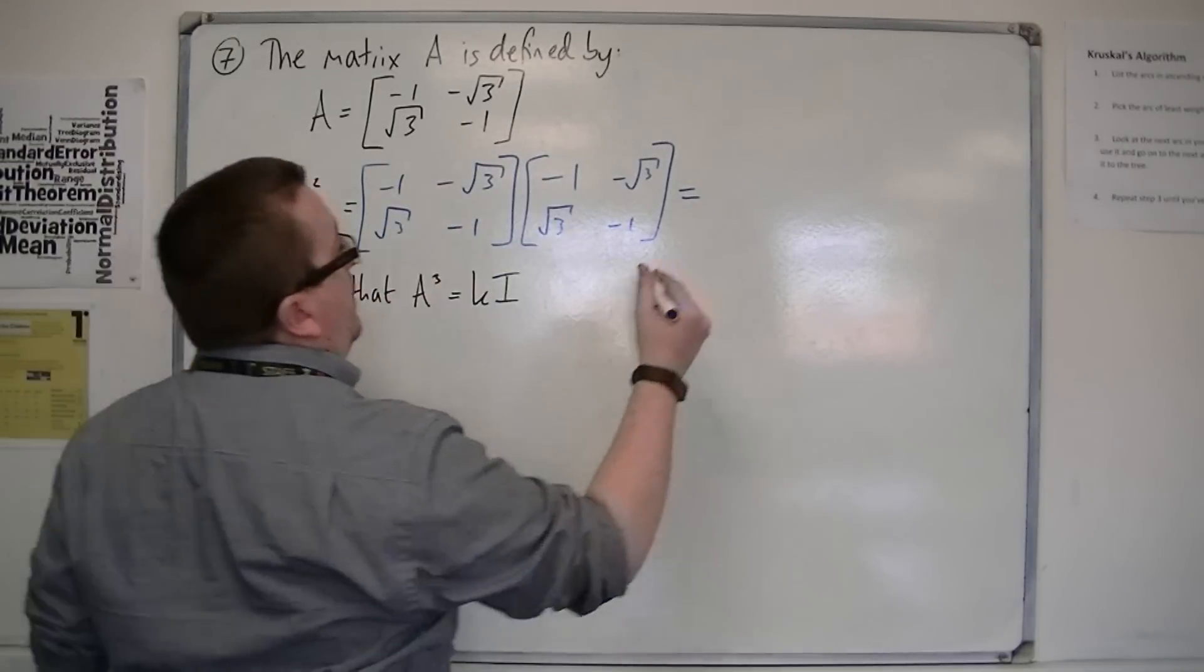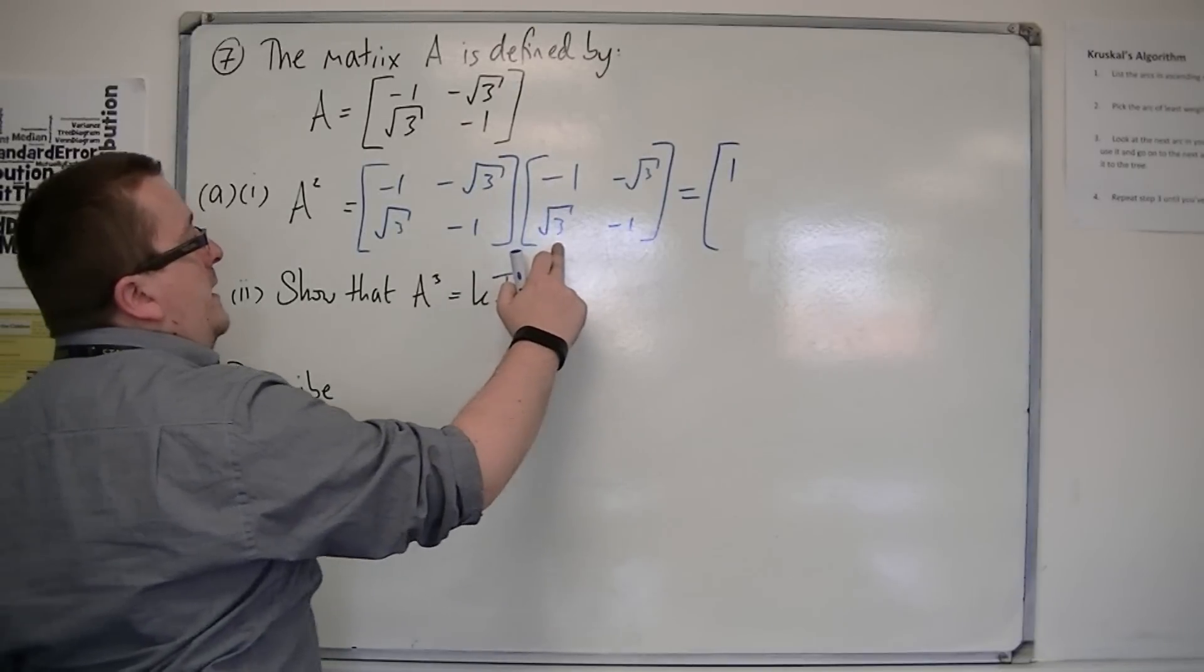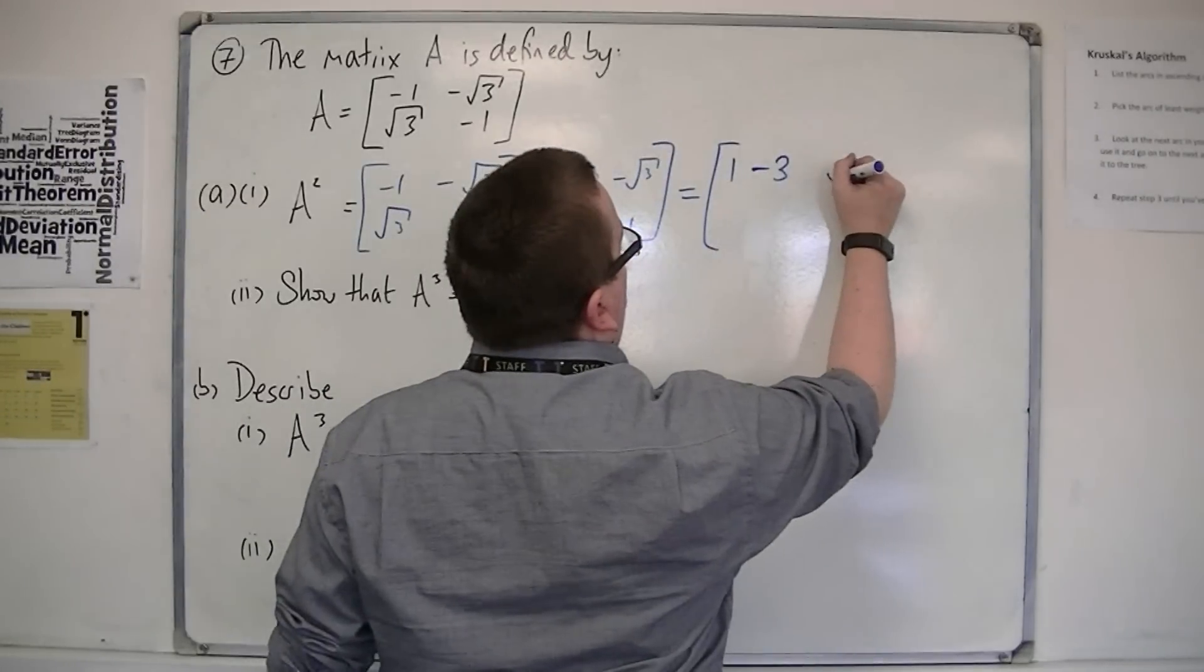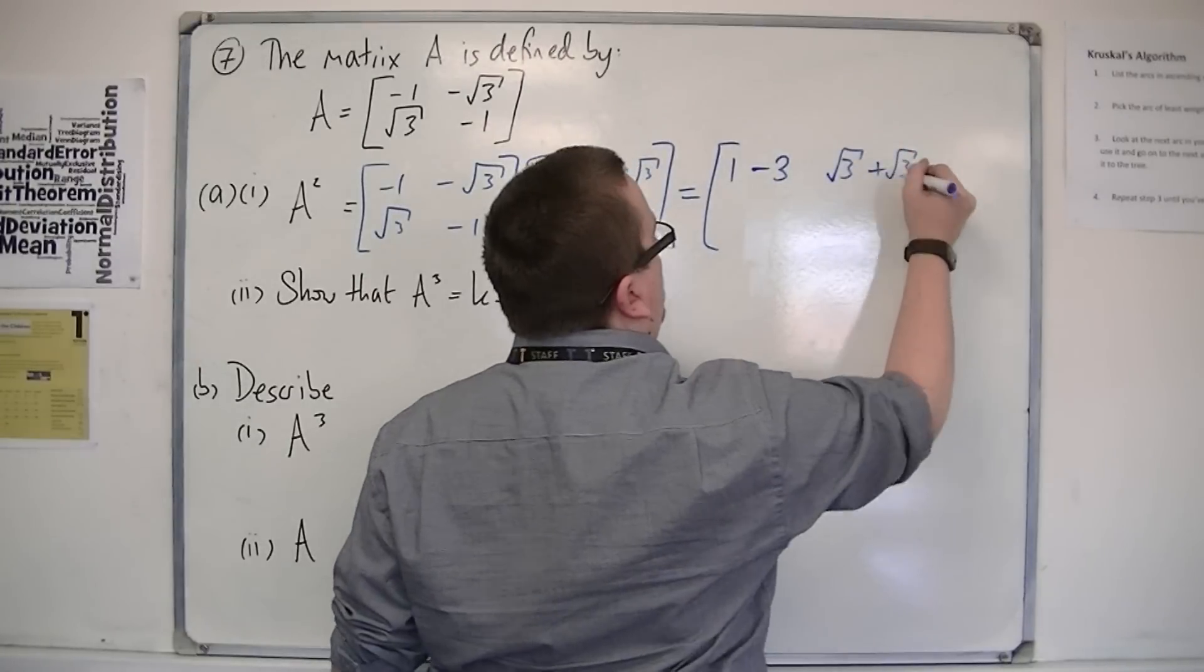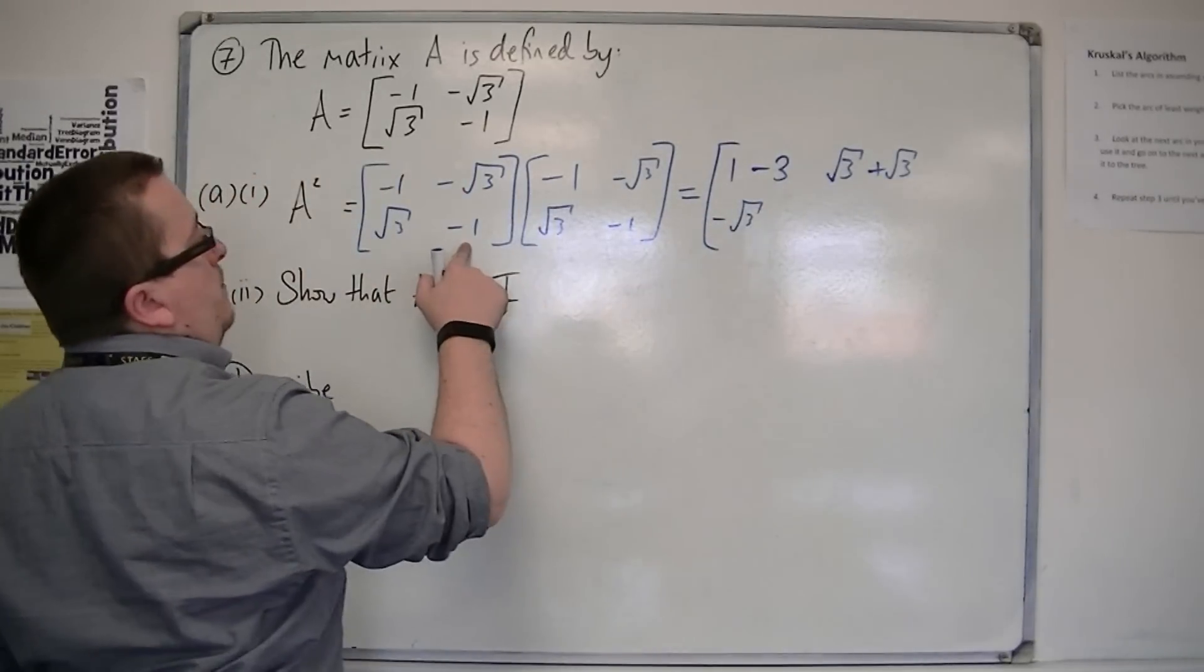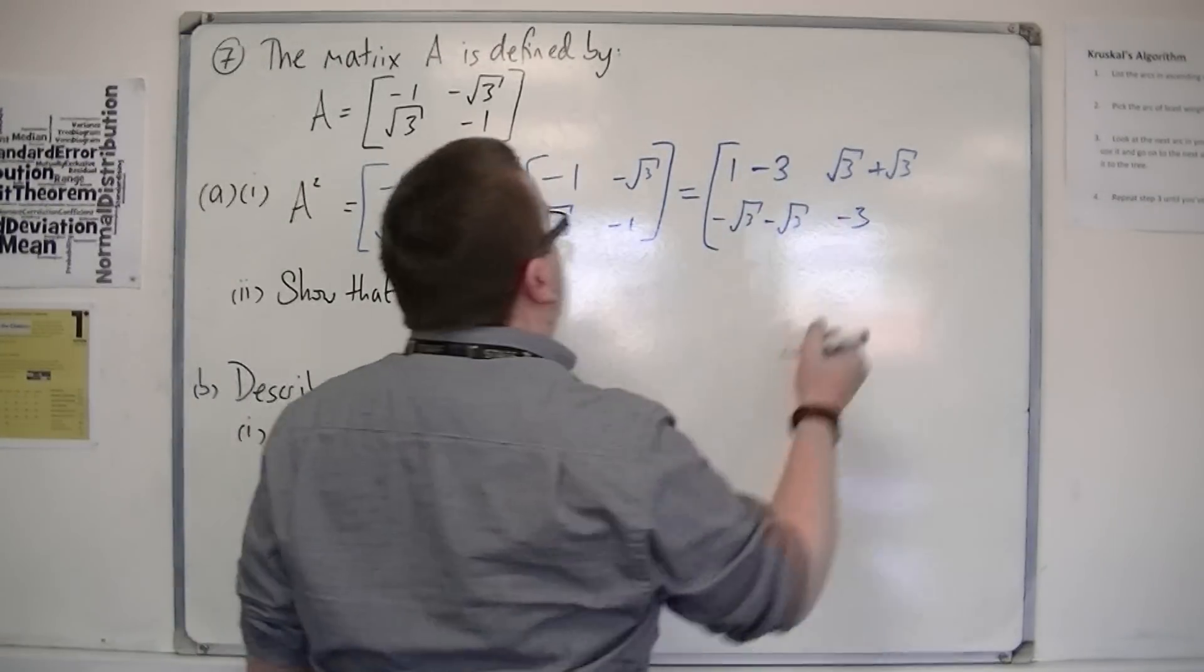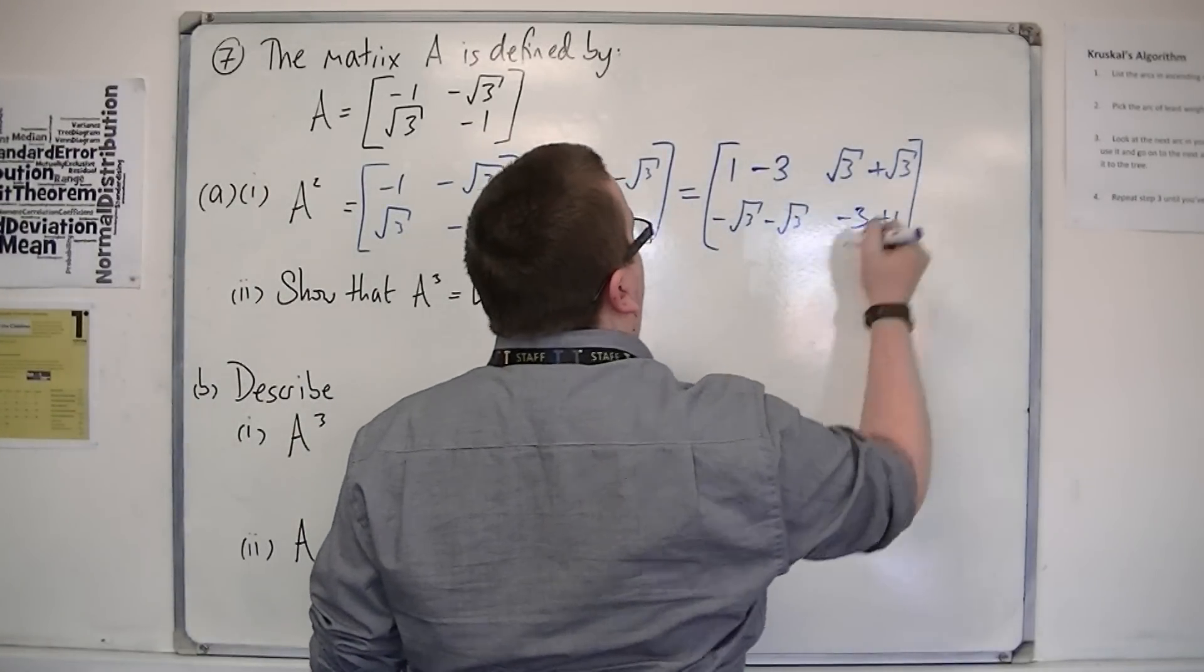So we've got minus 1 times minus 1 will be 1. And then we've got minus root 3 times root 3, which would be minus 3. Then we've got minus 1 times minus root 3, so that's going to be root 3. And minus root 3 times minus 1, so that's plus root 3. Root 3 times minus 1, so minus root 3. Minus 1 times root 3 is minus root 3. Root 3 times minus root 3 is minus 3.